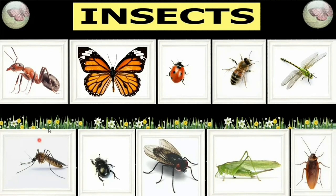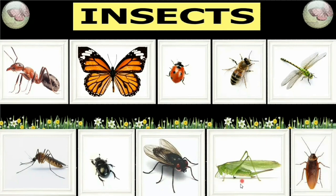Let us repeat the names one last time. This is an ant. This is a butterfly. This is a ladybird. This is a honeybee. This is a dragonfly. This is a mosquito. This is a beetle. This is a housefly. This is a grasshopper. And this is a cockroach.